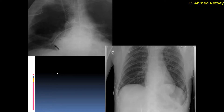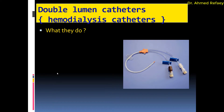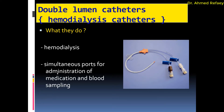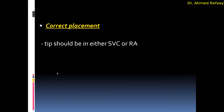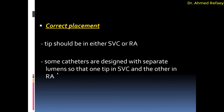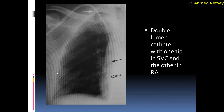Coming to the last catheter: double lumen catheters or hemodialysis catheters. What they do: used in hemodialysis, and for simultaneous administration of medications and blood sampling. Regarding correct placement, the tip should be in either the superior vena cava or right atrium. Some catheters are designed with separate lumens so that one tip is in the superior vena cava and the other in the right atrium, as you see here.